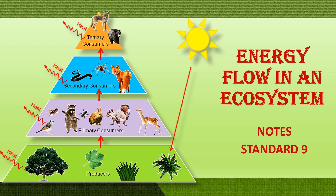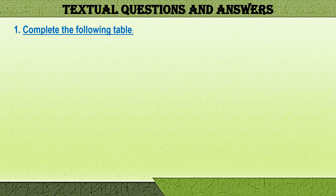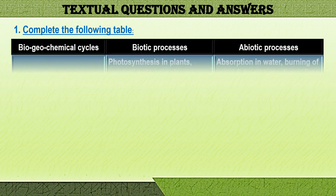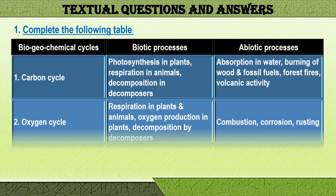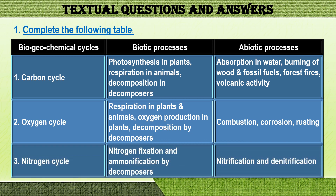Question one: complete the following table on biogeochemical cycles and the biotic and abiotic processes that go on in these cycles. The first one is the carbon cycle, where the biotic processes include photosynthesis or food-making in plants, respiration or breathing in animals, and decomposition in decomposers. The abiotic or non-living processes include absorption in water, burning of wood and fossil fuels.